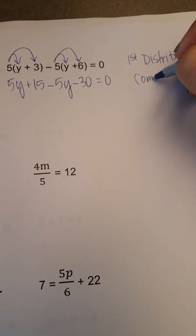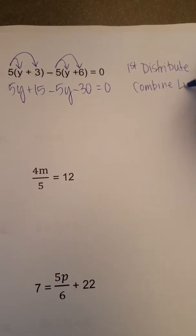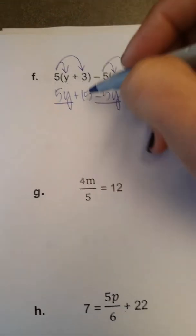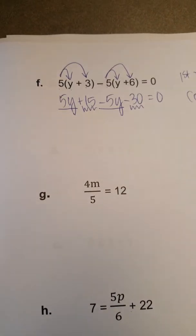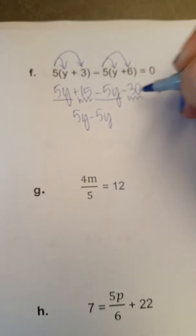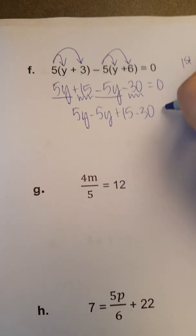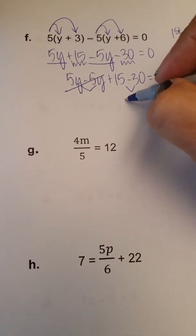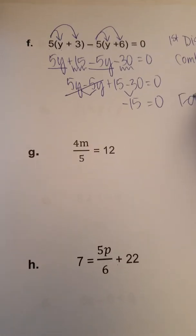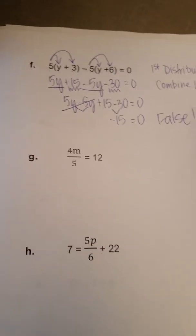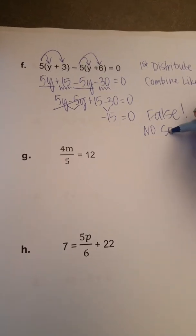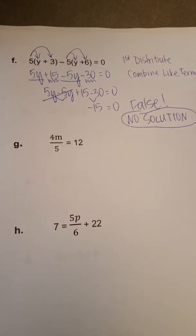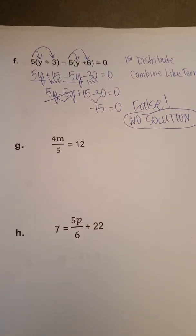Now I have some like terms that I should combine. For example, 5y and negative 5y are like terms, and 15 and negative 30 are like terms. Some people would prefer to rewrite this equation with the like terms next to each other. So you could see that 5y minus 5y, that cancels out. 15 minus 30 is negative 15 is equal to 0. Well, no, it's not. That's a false statement. When you are solving equations and you come to a false statement, that means there is no solution. When you're solving equations and you come to a true statement, such as 5 equals 5, that means there is an infinite number of solutions, namely all real numbers.